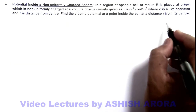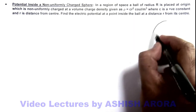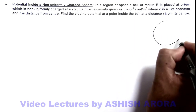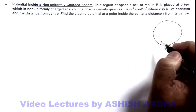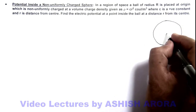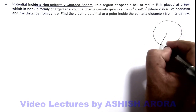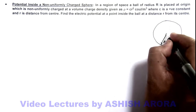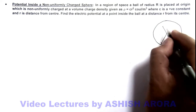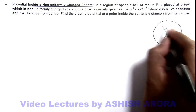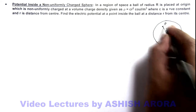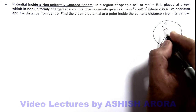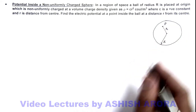If we draw a picture of the ball, which is of radius R but is non-uniformly charged, inside this ball at a distance small r, say at point P, we are required to find the electric potential.